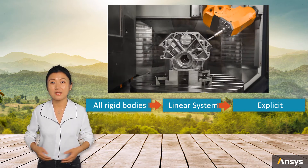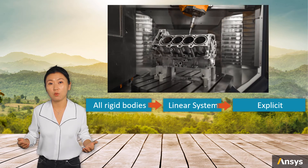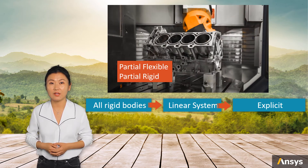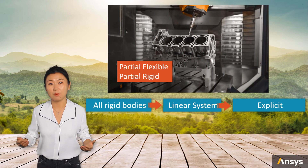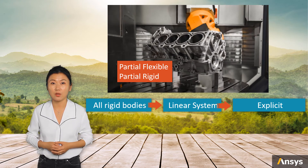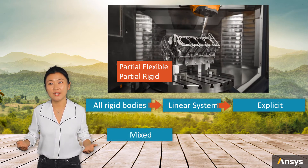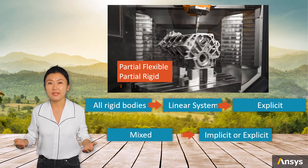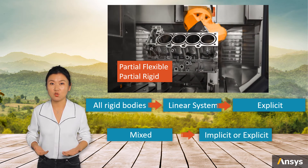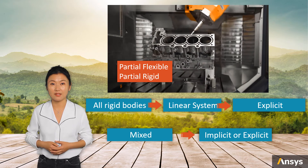In some cases where some parts are more flexible while others are very stiff, it is wise to combine flexible bodies and rigid bodies in one analysis. In such cases, either implicit or explicit method can be used depending on the condition of the flexible bodies.